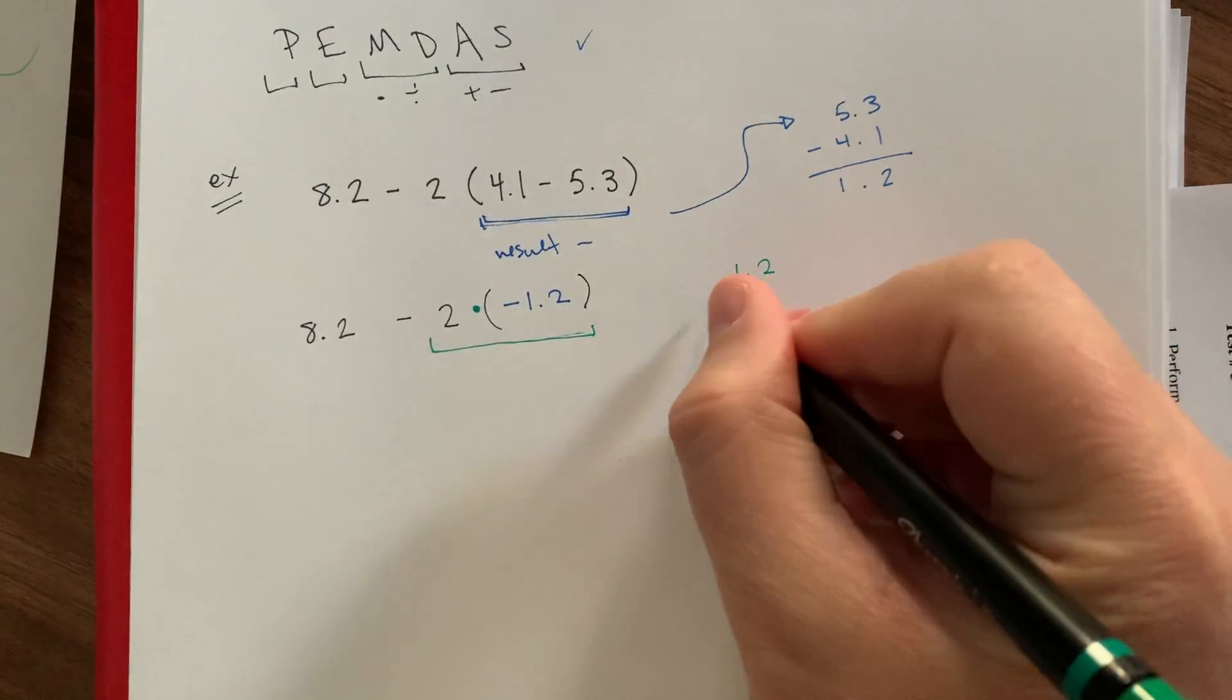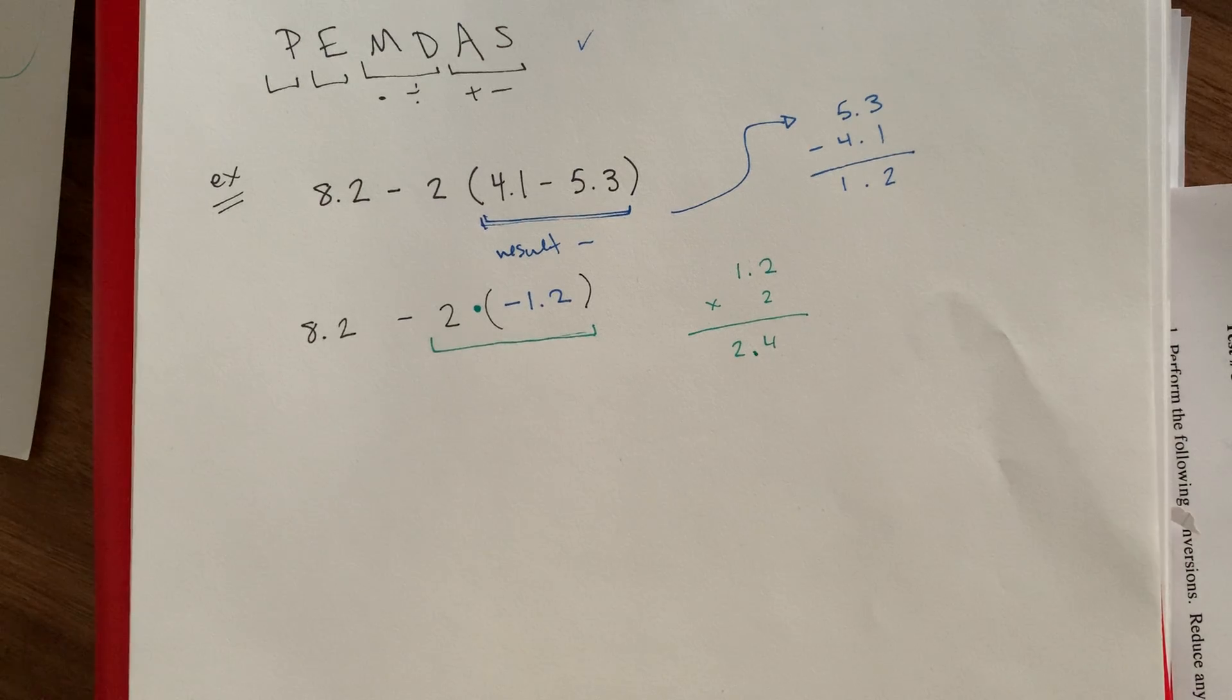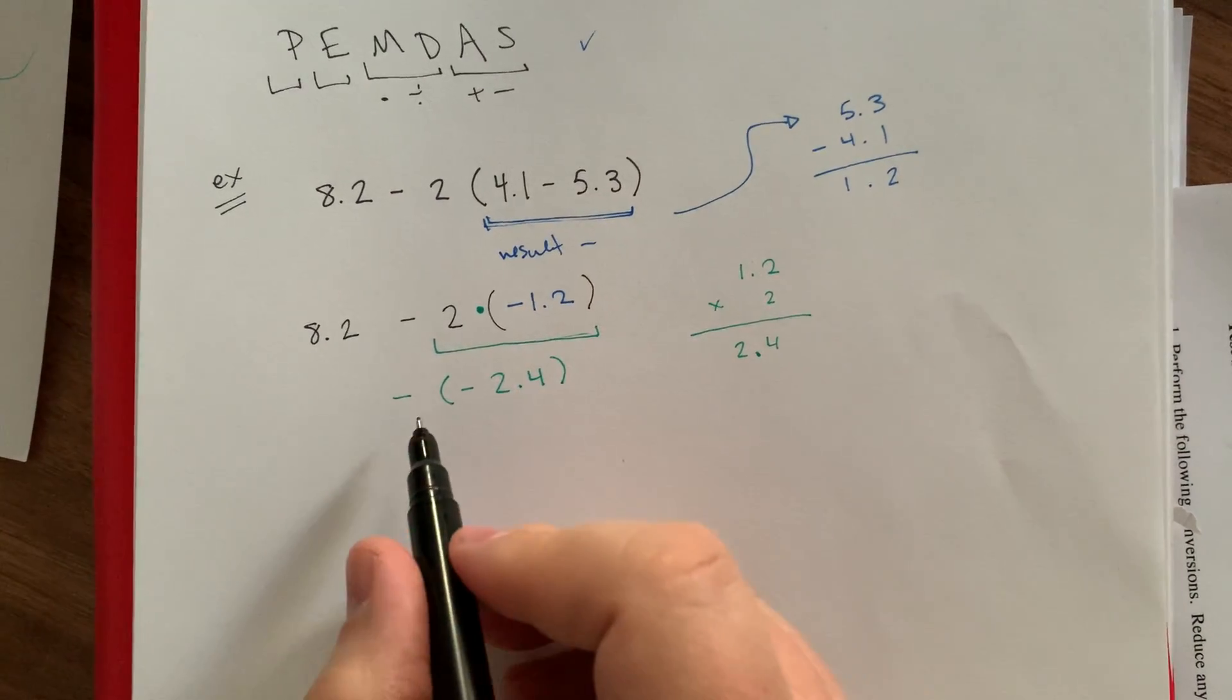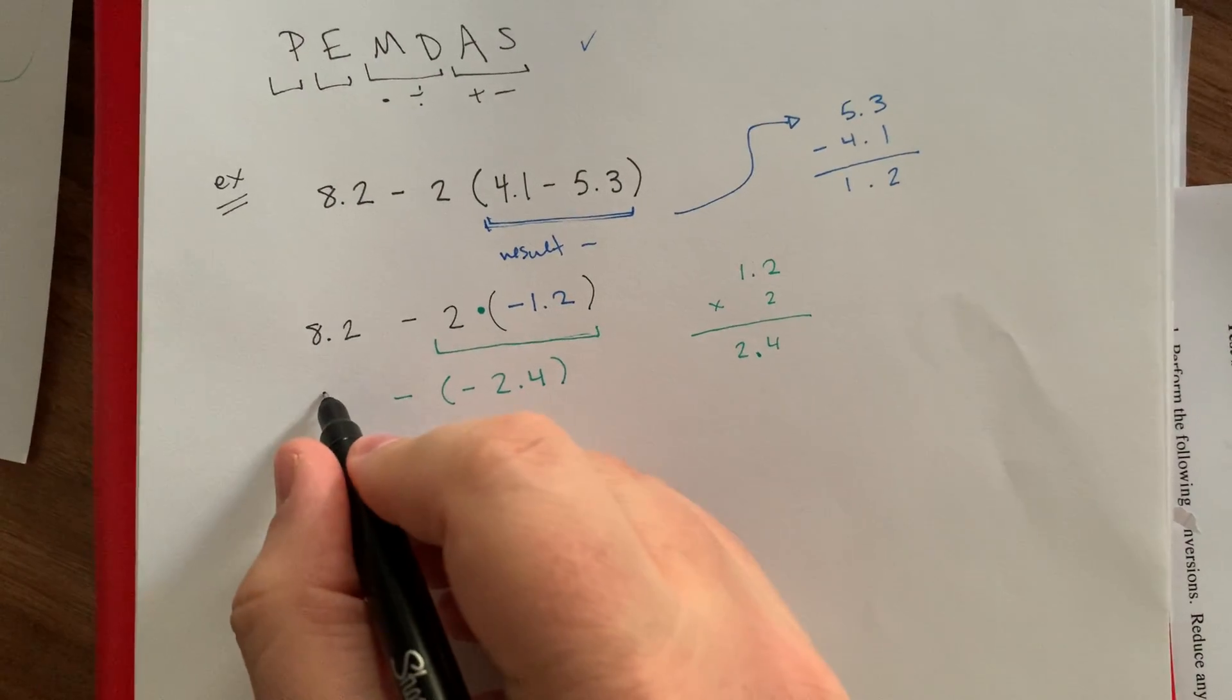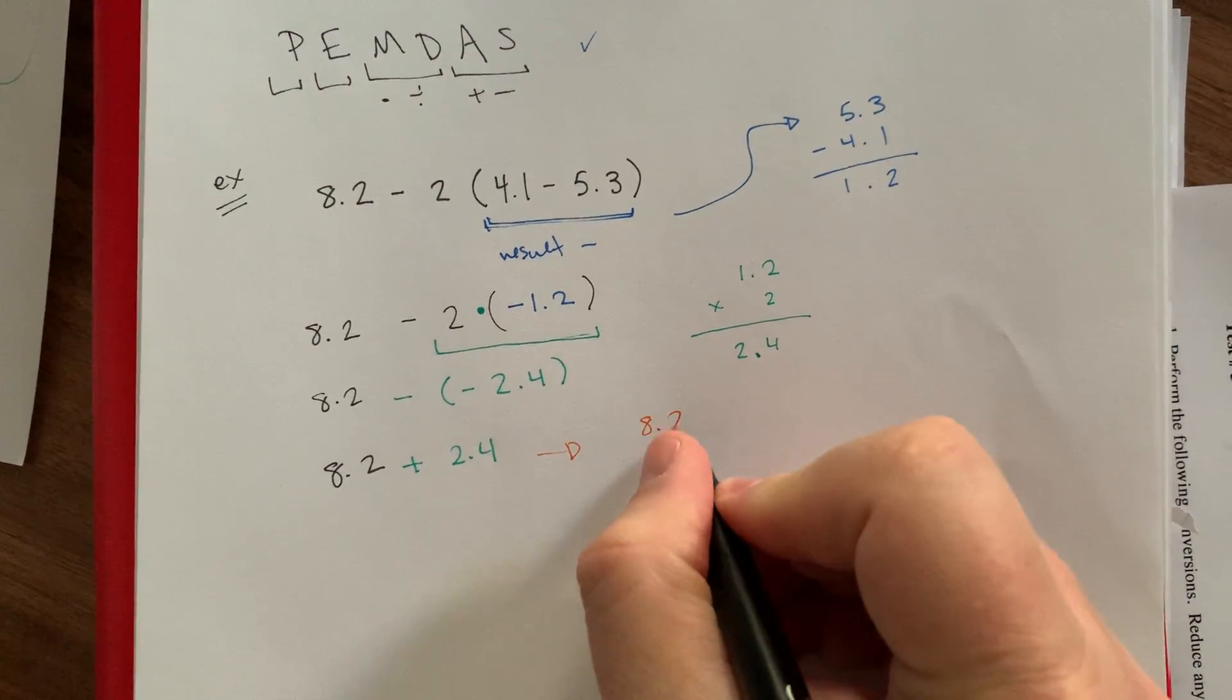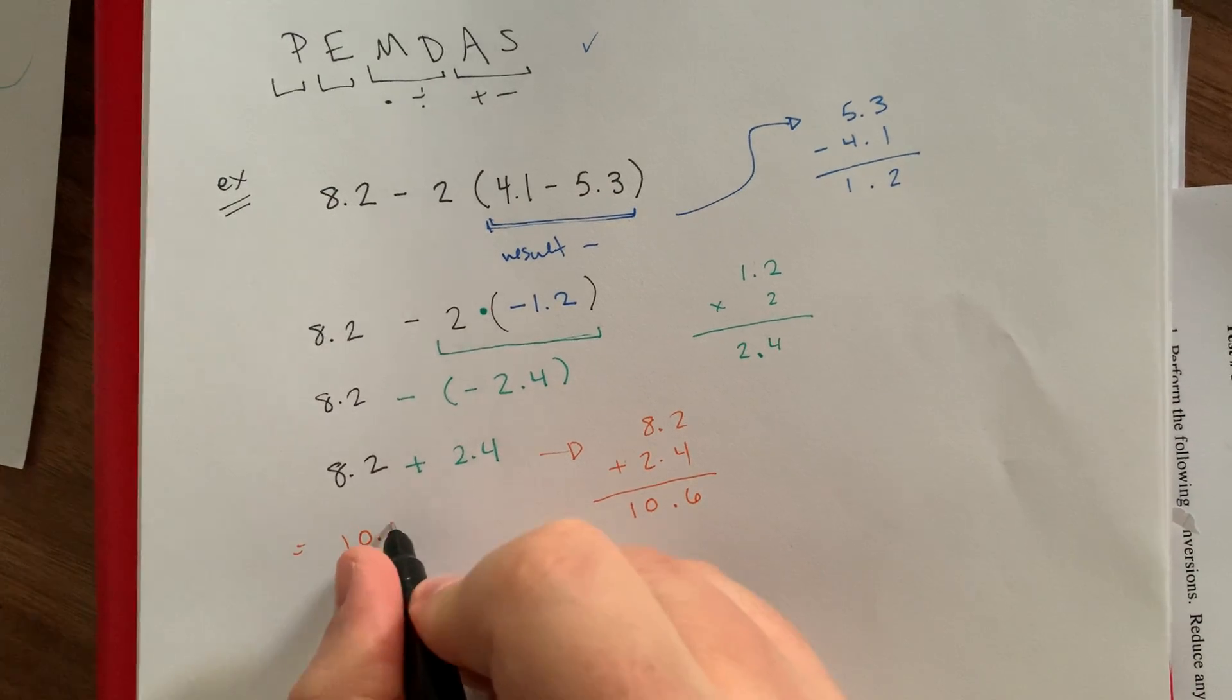So we need to do 1.2 times 2. 2 and 2 is 4, 2 and 1 is 2, we have one decimal place. So this is 2.4. This is positive 2 times this, so minus this would become negative 2.4. Minus a negative, of course, that's really going to be plus 2.4. And then if we carry the 8.2 down, what we're left with is this one last little bit of addition. Positive to positive, so that's kind of nice. 6, decimal comes down, 8 and 2 is 10. So the final here is positive 10.6.